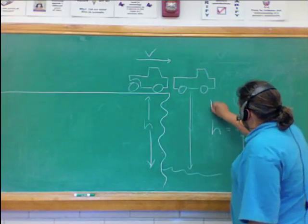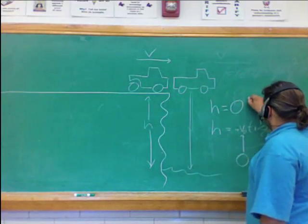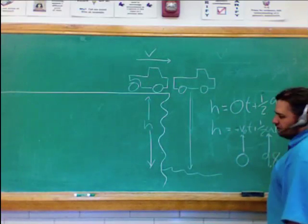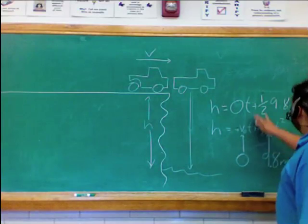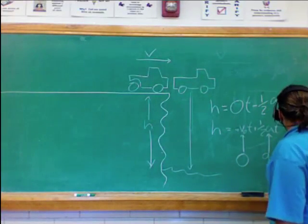I get height is equal to zero times t plus one-half, 9.8. Oops. Made a mistake already. This is negative 9.8 t squared.